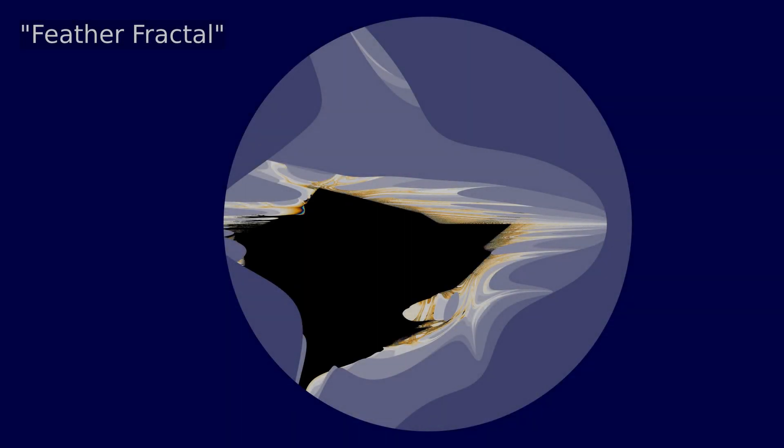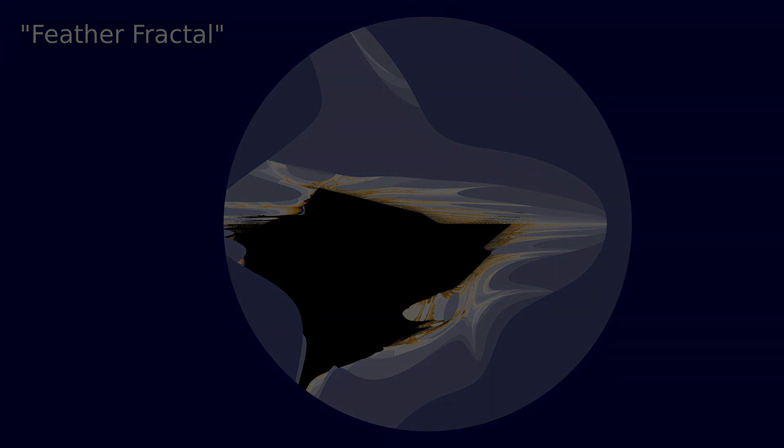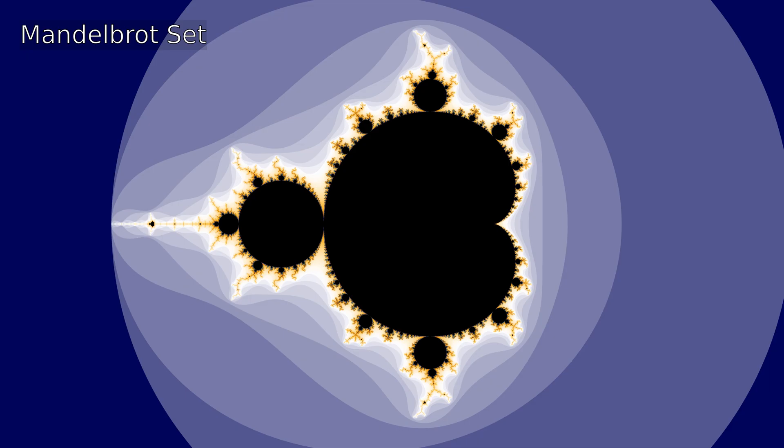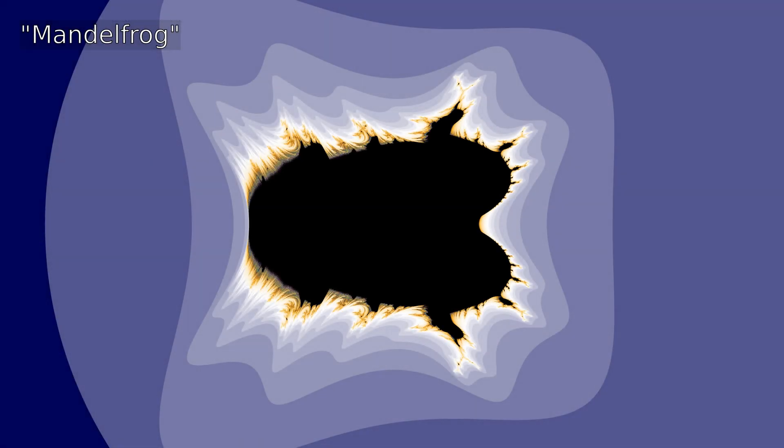After that I have the feather fractal, although I think my implementation is faulty. Next up is what happens if your implementation from the Mandelbrot set is either wrong or you skip one too many corners.